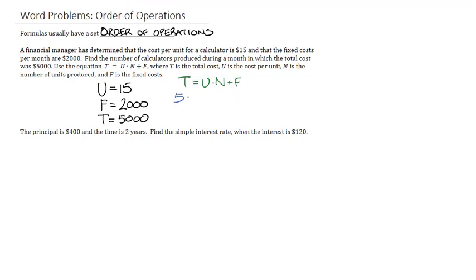Substituting all of these things in, I will get 5,000 is equal to 15 times n plus 2,000. And we can solve this like any other algebraic equation. I will just subtract 2,000.